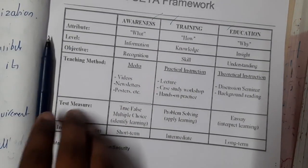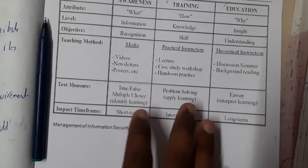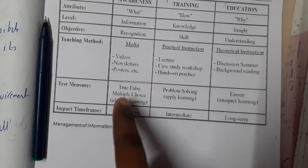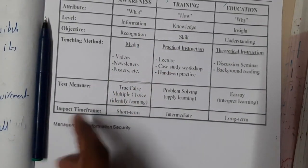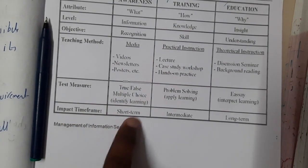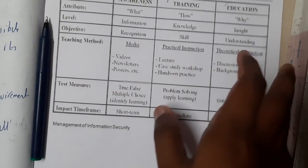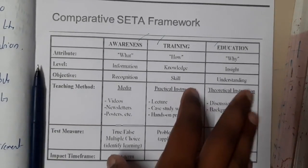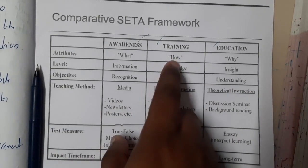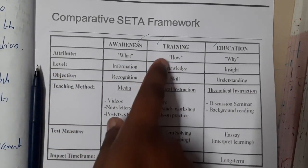By observing these materials you understand what is being taught. At the end there is a test with true or false questions. Awareness is short-term in nature. Moving on to Training — in training you define how to do things, focusing on giving knowledge.